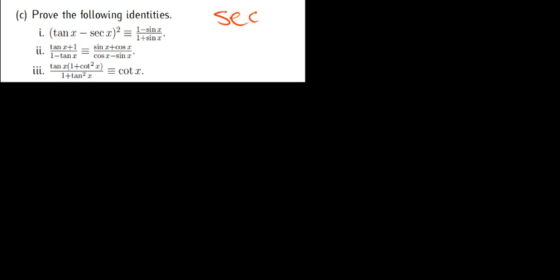We are on 13c part 1 — prove the following identities. Now proving the first one is going to be a bit tricky. I don't think we can prove this one as written because there was an error in the question. It was supposed to be sec x minus tan x, not the way it is. I am going to show you how to prove the corrected version — this question was supposed to be like this.